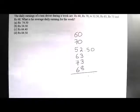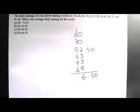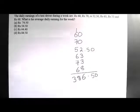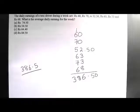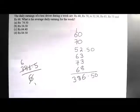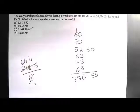Adding these up gives a sum of 386.5, which is the sum of all the observations. We divide 386.5 by 6, which is the number of observations. This gives us an answer of 64.4 rupees as the average daily earning.